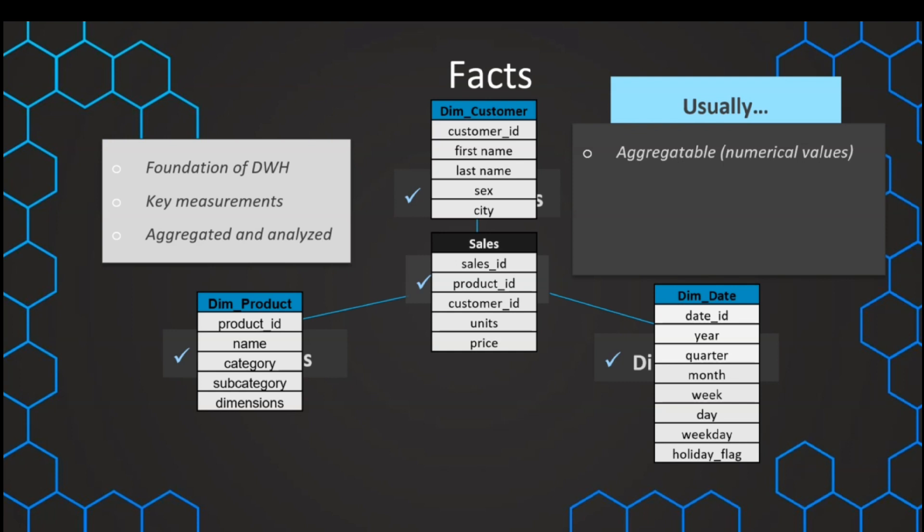And therefore, they are very commonly numerical values. And they are, in contrast to the dimensions, not descriptive, but they are measurable. And then, also, we have different types of facts, which we'll talk about later on.